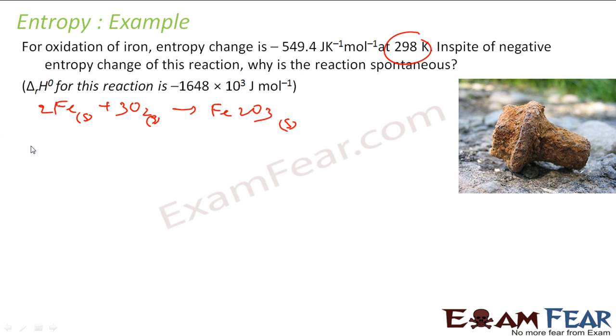And it says that delta S is my delta S of the system. Delta S of the system is -549.4, that is negative, but still it is spontaneous. Why? The trick here is we never talk about delta S of the system, we always talk about change in entropy total, and that is nothing but change in entropy of the system plus change in entropy of surrounding.